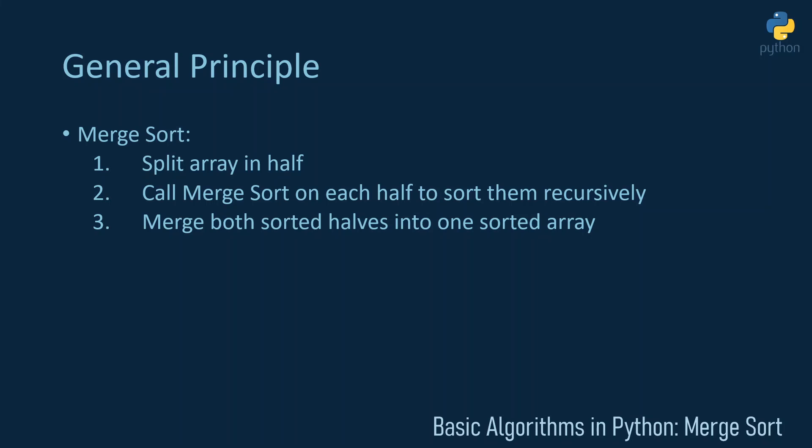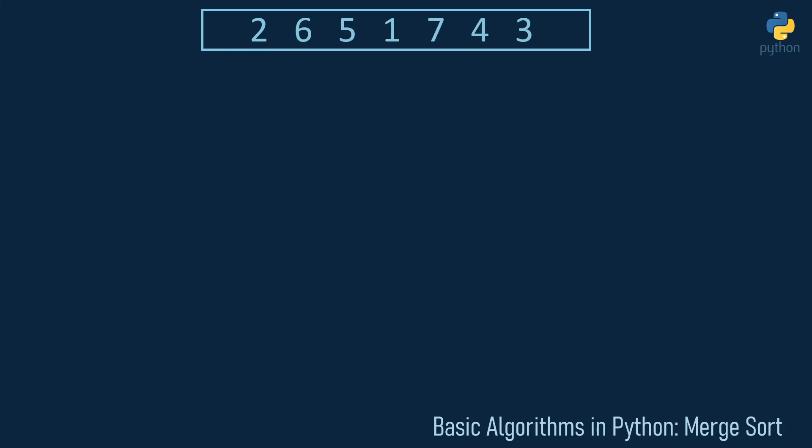Arrays of size one are always sorted, which makes that sub-problem very easy to solve. Let's work through an example to clarify all the details. We'll sort an example array of seven numbers, starting with the dividing step of merge sort.